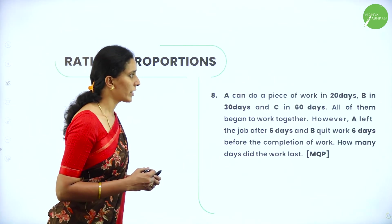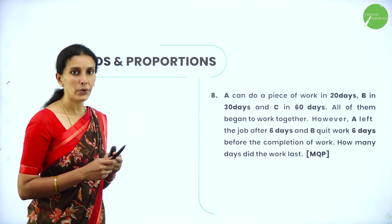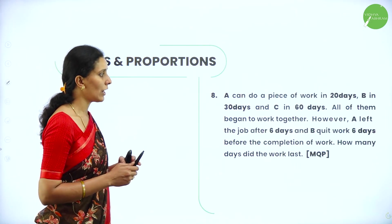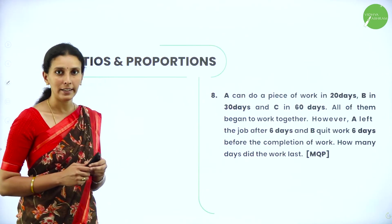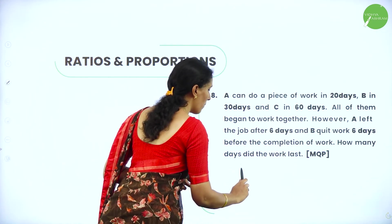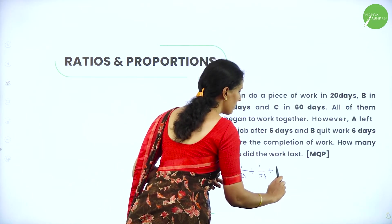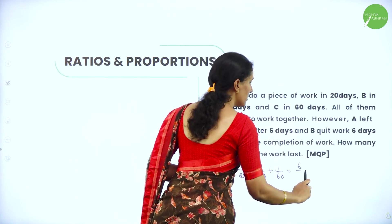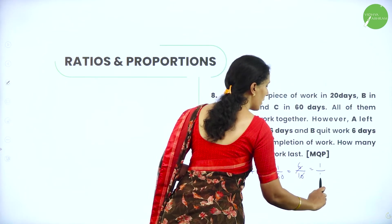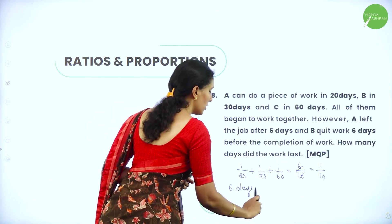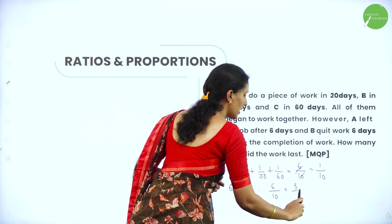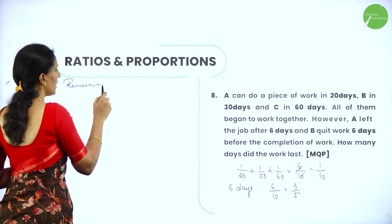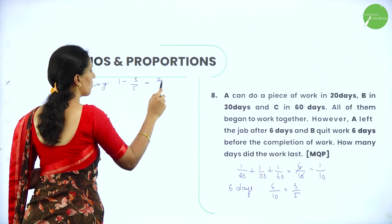Next: If A can do a piece of work in 20 days, B in 30 days, and C in 60 days, all begin to work together. However A left after 6 days, and B quit 6 days before the completion of work. How many days did the work last? The sum of all work per day is 1 by 20 plus 1 by 30 plus 1 by 60, which equals 1 by 10. For 6 days the work done is 6 by 10, equal to 3 by 5. Remaining work is 1 minus 3 by 5 equals 2 by 5.